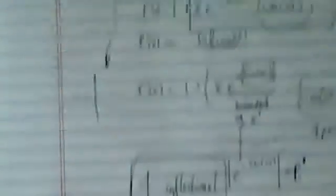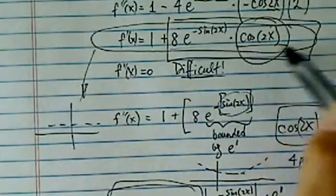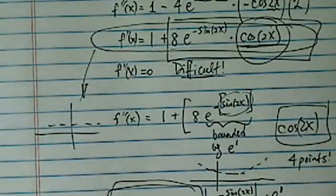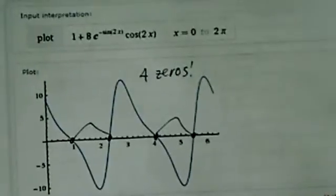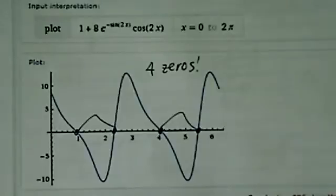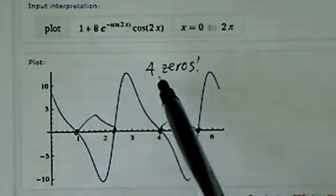So once again, I found the second derivative, looked at the function, and said what's really important is the cos(2x) term. That determines how many times it crosses the x-axis, and the computer generated graph shows I have four zeros.